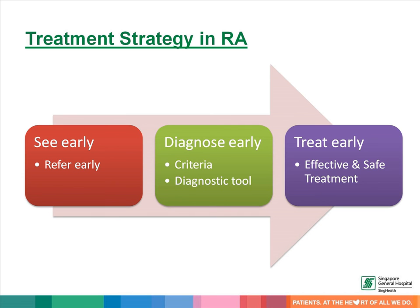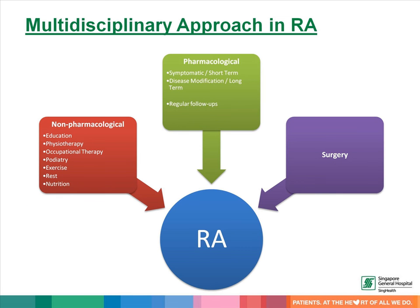The most important management strategy in rheumatoid arthritis is to see the patient early, diagnose them early, and treat them early. Once the diagnosis is confirmed, the management of rheumatoid arthritis is multidisciplinary. While the rheumatologist is the key physician managing the condition, nurses, physiotherapists, occupational therapists, podiatrists, nutritionists, and orthopedic surgeons all play an important role.